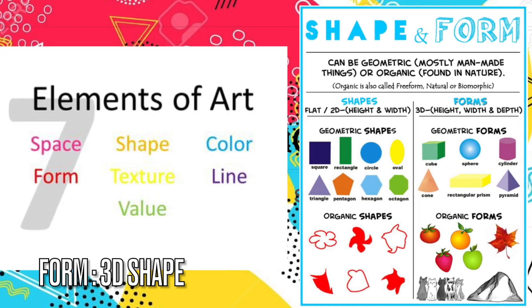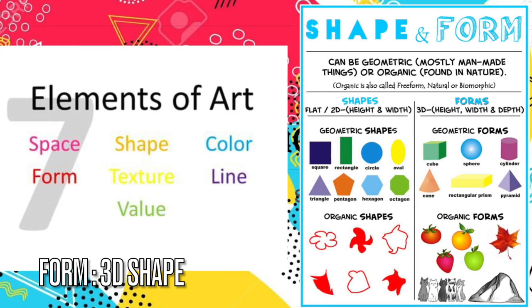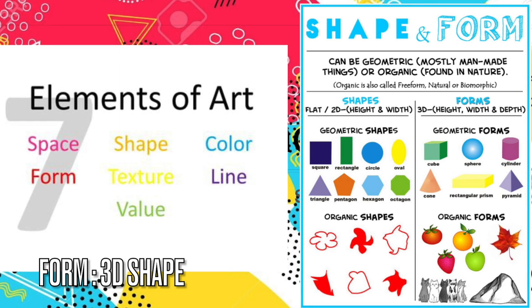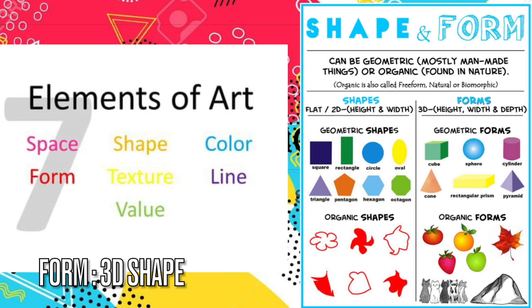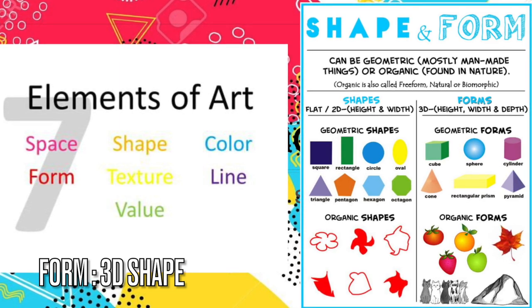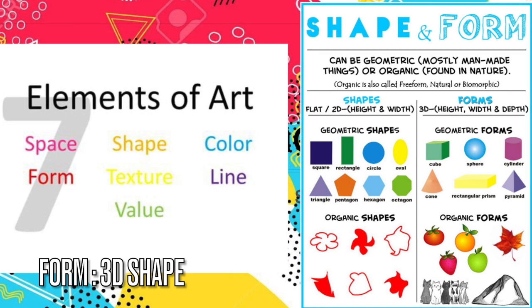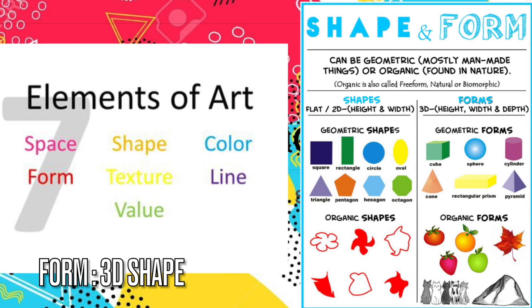Some common forms that are familiar to us are spheres, cubes, cylinders, and cones. These are geometric forms, but there are also organic forms such as plants, fruits, people, and animals. Forms are all around us.